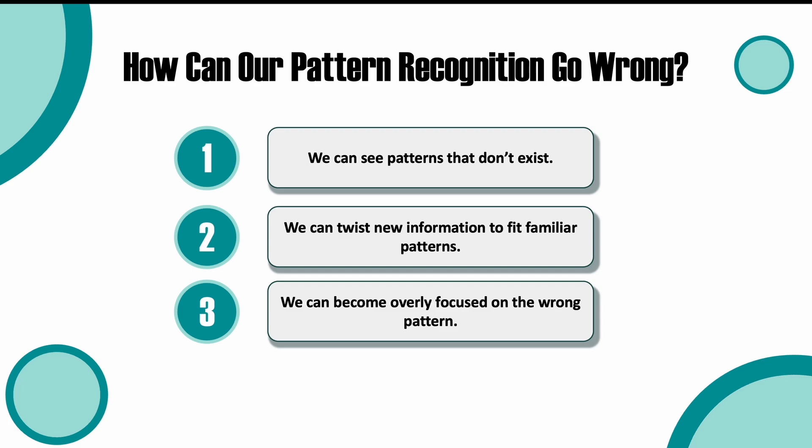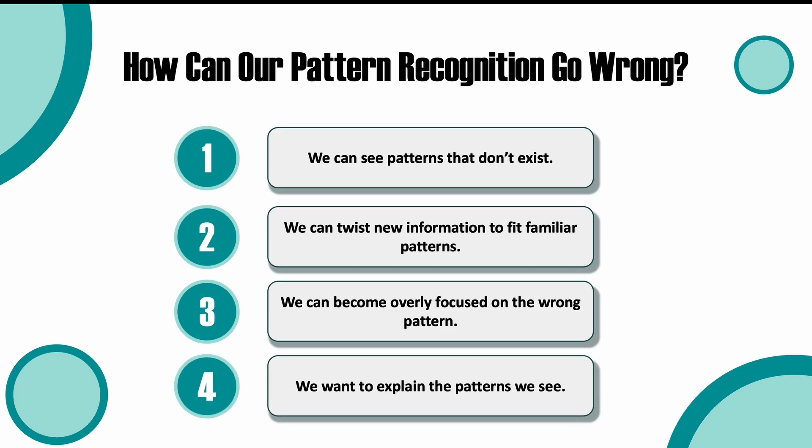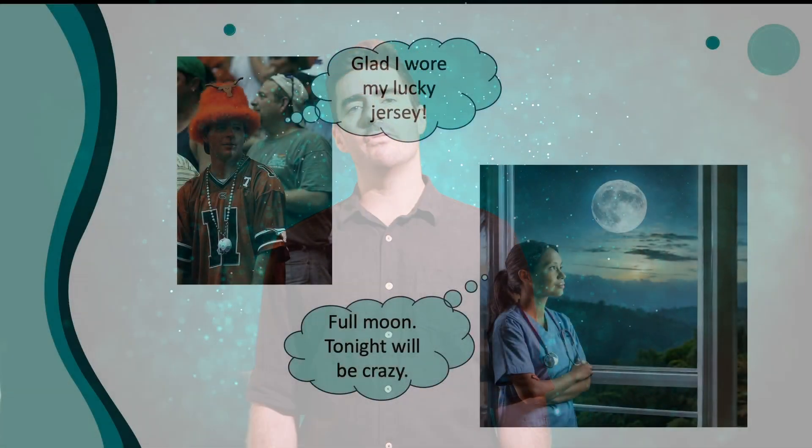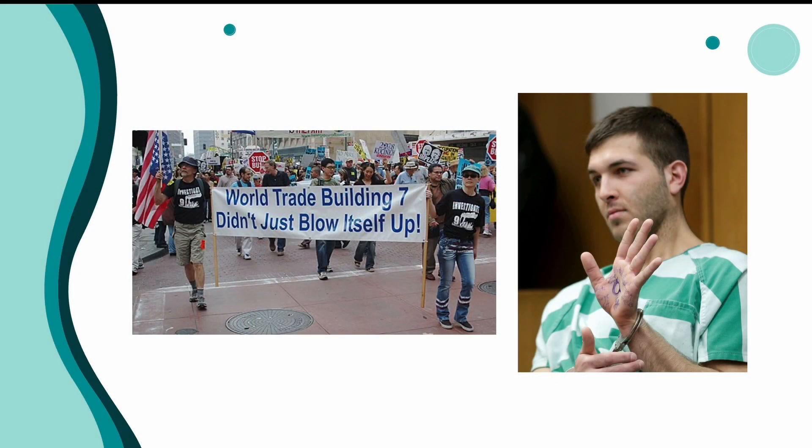Finally, humans are not only driven to see patterns in the world, but we want to explain them. The problem is that our explanations for the patterns we see are often wrong. Sometimes when we come up with a wrong explanation for a pattern, it can be harmless, like believing that your favorite sports team keeps winning because you've worn your lucky jersey to every game. But sometimes people think they see patterns in world events and start to believe that they're being caused by an unseen force or group. This is one of the causes of conspiratorial thinking, which can be potentially very dangerous. So our pattern recognition is a powerful tool, but like all powerful tools, it can be dangerous when used incorrectly.